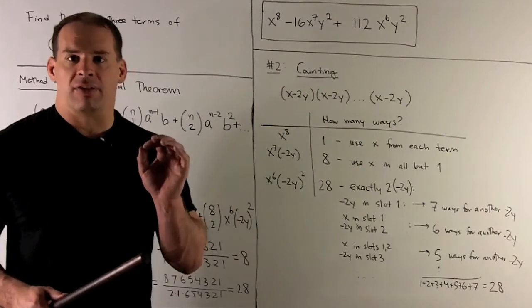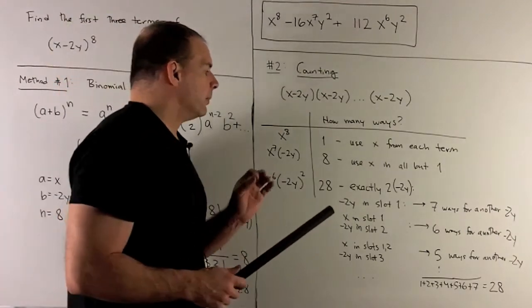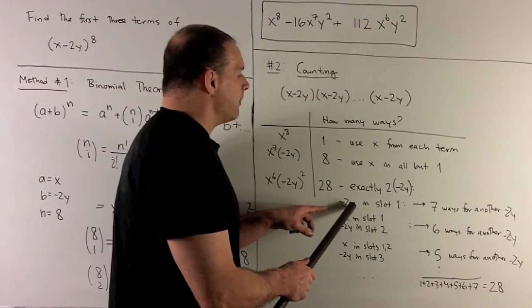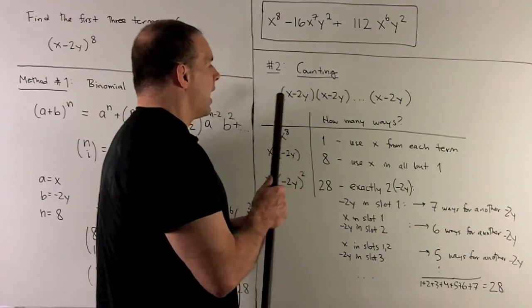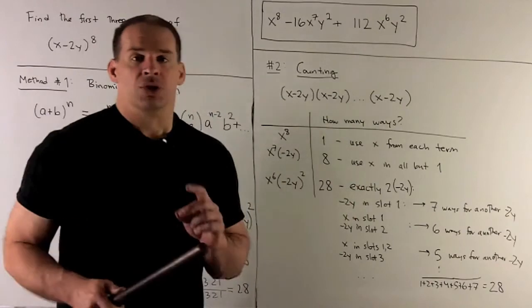So, we have to be a little bit more clever about how we go through that. So, this is just bookkeeping. Now, let's see what's going on. Suppose I choose a -2y from our first set of parentheses. How many ways are there going to be to choose another -2y?